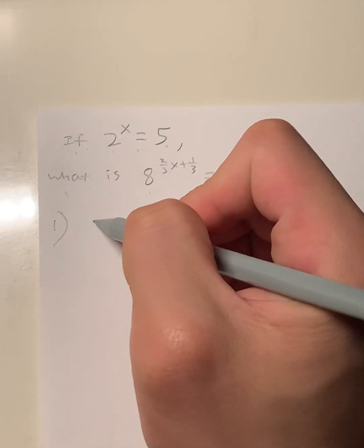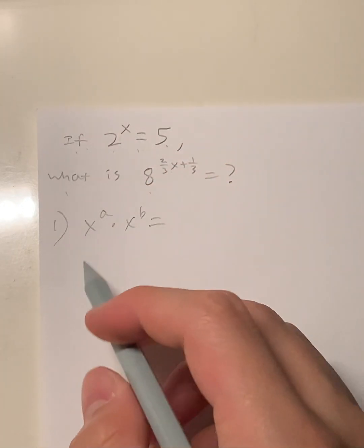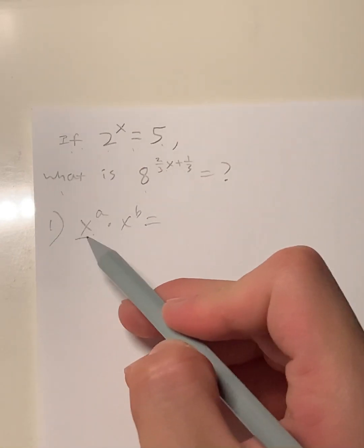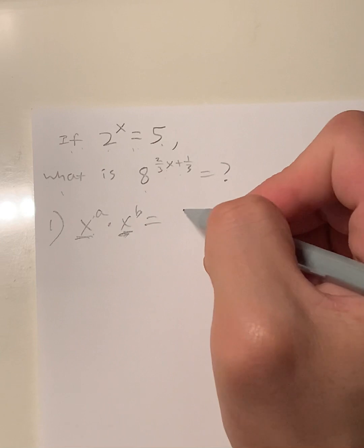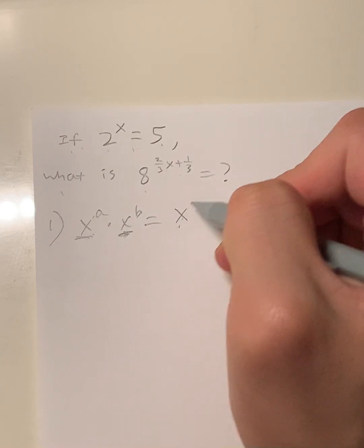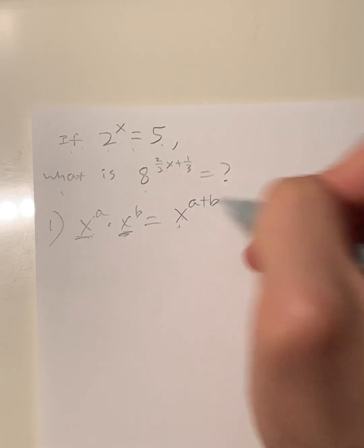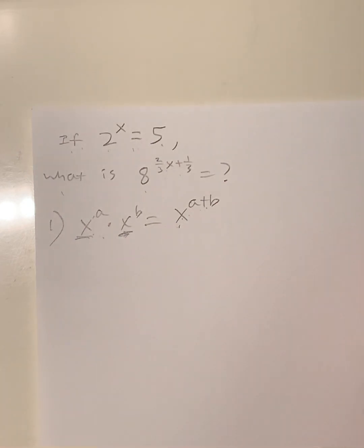Rule number one: x^a times x^b. When you're multiplying exponents with the same base, x, which is our base, a and b are exponents, that's equal to x^(a+b). So all you have to do is add the exponents when you're multiplying them.